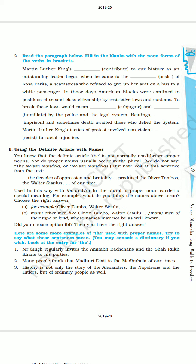Martin Luther King's contribution to our history as an outstanding leader began when he came to the assistance of Rosa Parks, a seamstress who refused to give up her seat on a bus to a white passenger. In those days, American blacks were confined to positions of second-class citizenship by restrictive laws and customs. To break these laws would mean subjugation and humiliation by the police and the legal system.